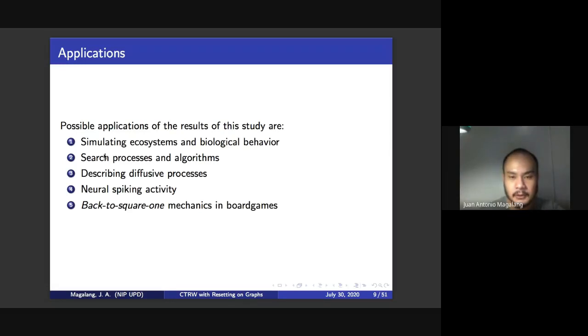So possible applications of resetting random walks would be simulating ecosystems, optimizing search processes and algorithms, describing diffusive processes, neural spiking activity, and back to square one mechanics in board games, for example.